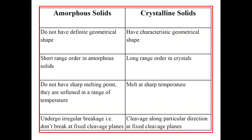You can understand the difference between amorphous solids and crystalline solids with the help of this table. Amorphous solids do not have a definite geometrical shape, whereas crystalline solids have a characteristic geometrical shape. Amorphous solids have short range order, whereas long range order is found in crystalline solids. Amorphous solids do not have a sharp melting point — they soften over a range of temperatures — whereas crystalline solids melt at a sharp temperature.